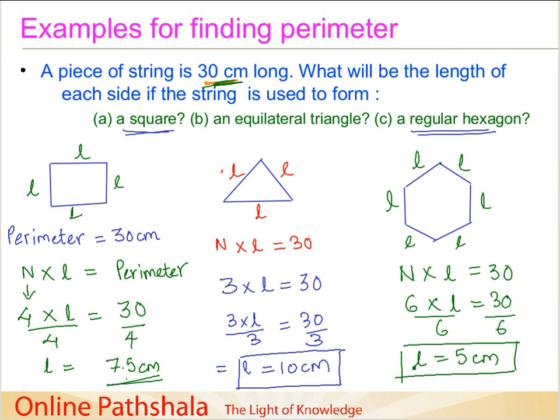Now there is an interesting observation that you would have seen here. For a fixed length, what is happening to the sides? The minimum number of sides is triangle, it has 3 sides. Then comes square in this case, and then we came to hexagon. Of course you could also have a regular pentagon as well, but in this example we have these 3 figures.